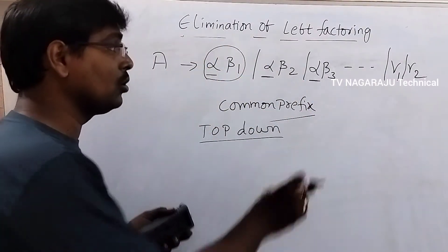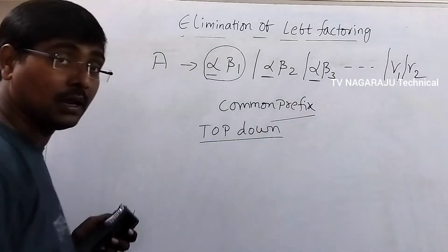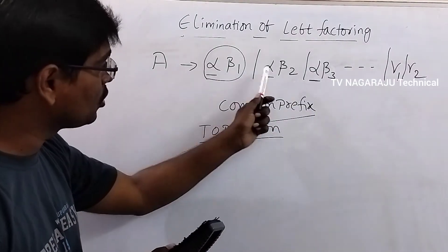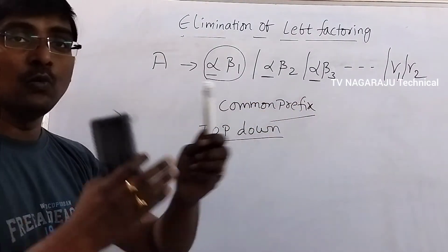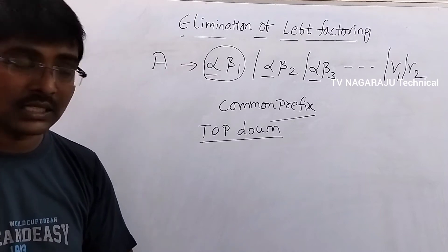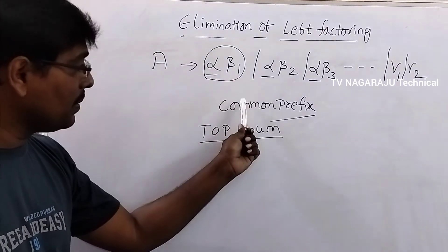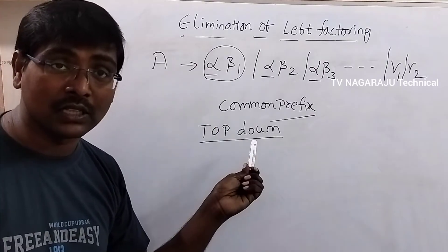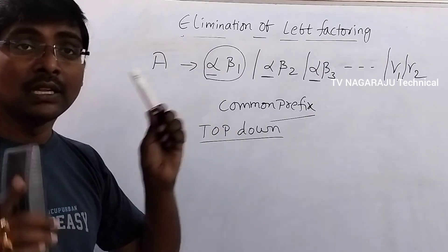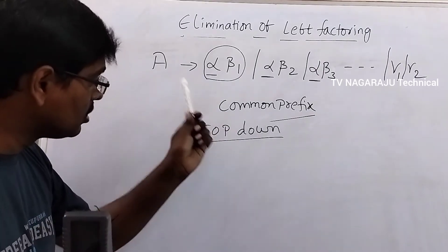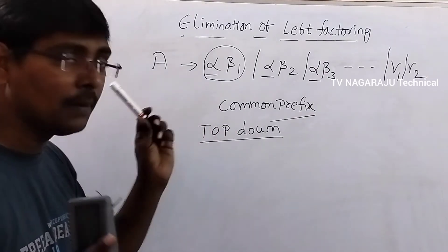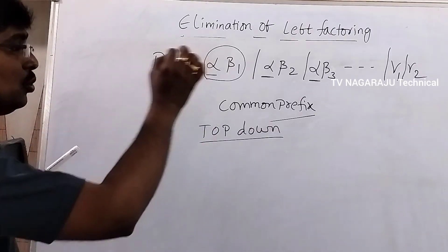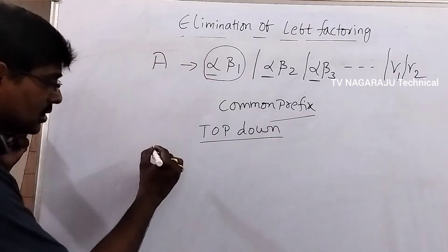You backtrack to the start step and consider the next production. If it is okay, then fine; if not, you move to the next one. We know only the first character but not the remaining ones. That means we have to eliminate these common prefixes so that it is very useful for the top-down parser to derive a string.